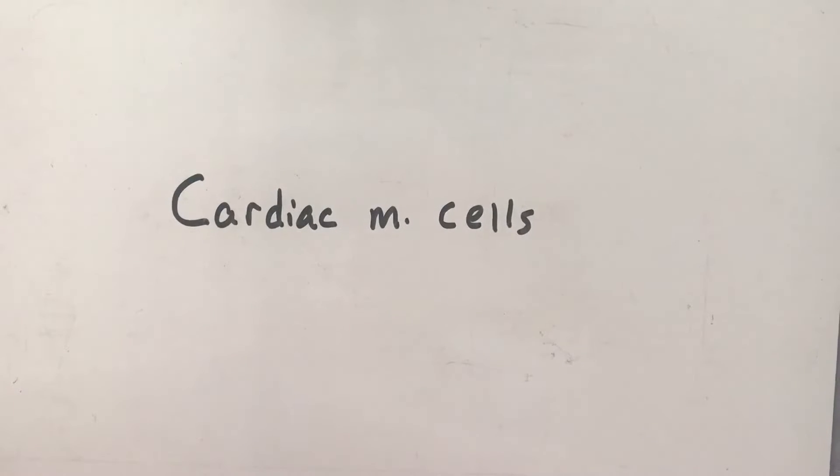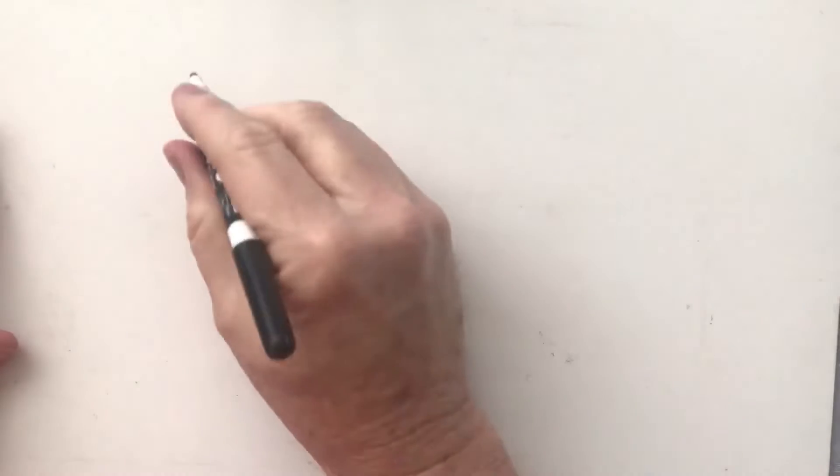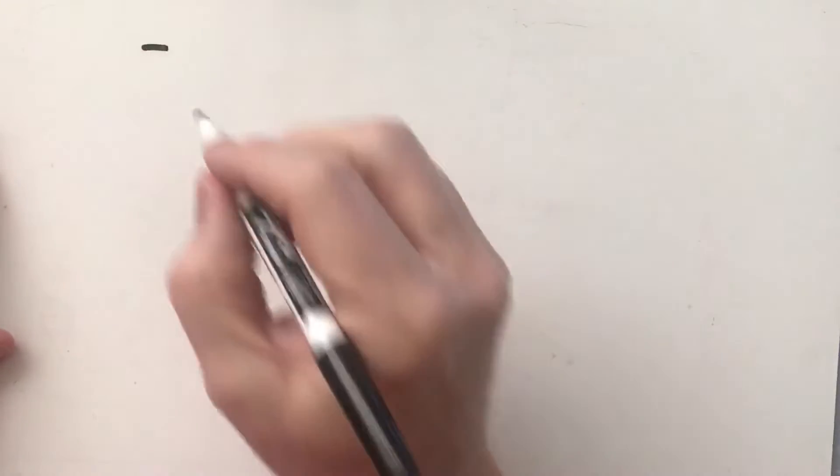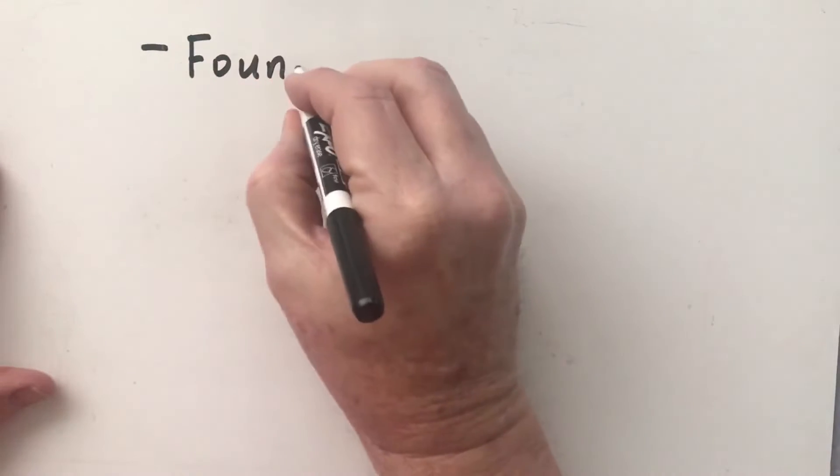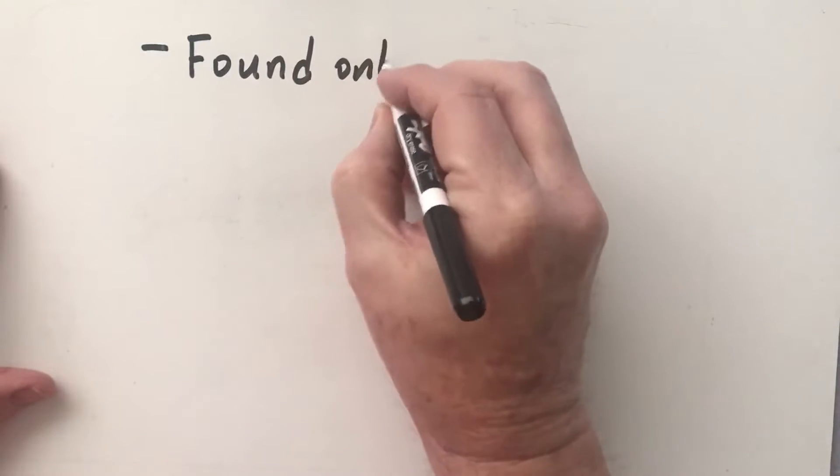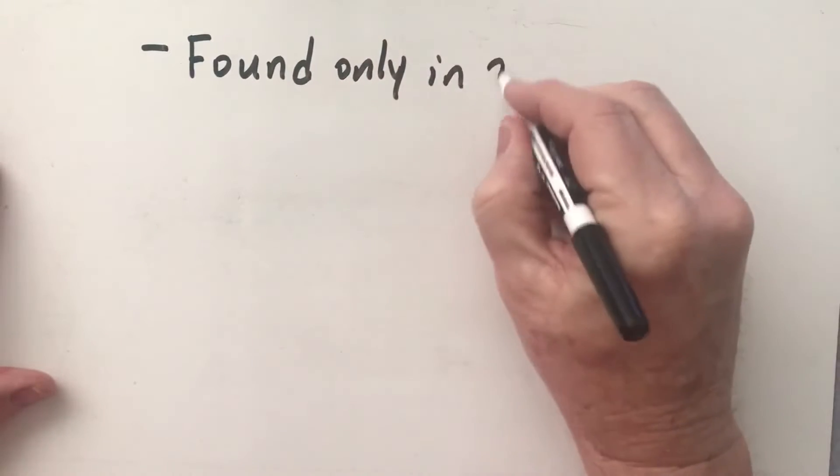Okay everybody, so today we are going to talk about cardiac muscle cells. Here's some points about cardiac muscle cells. First of all, cardiac muscle cells - where do you think they're found? They're found only in the heart, which makes sense, otherwise they wouldn't be cardiac muscle cells, right?